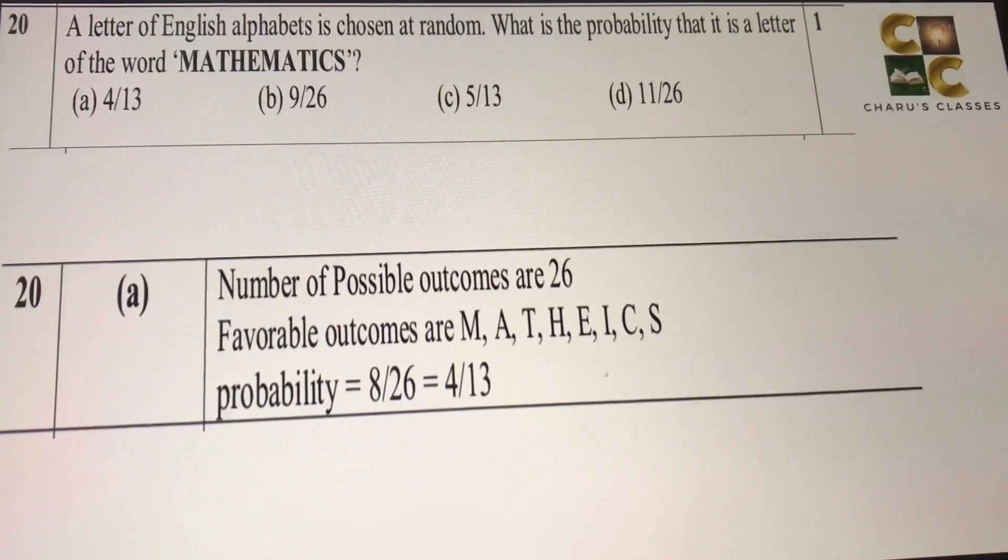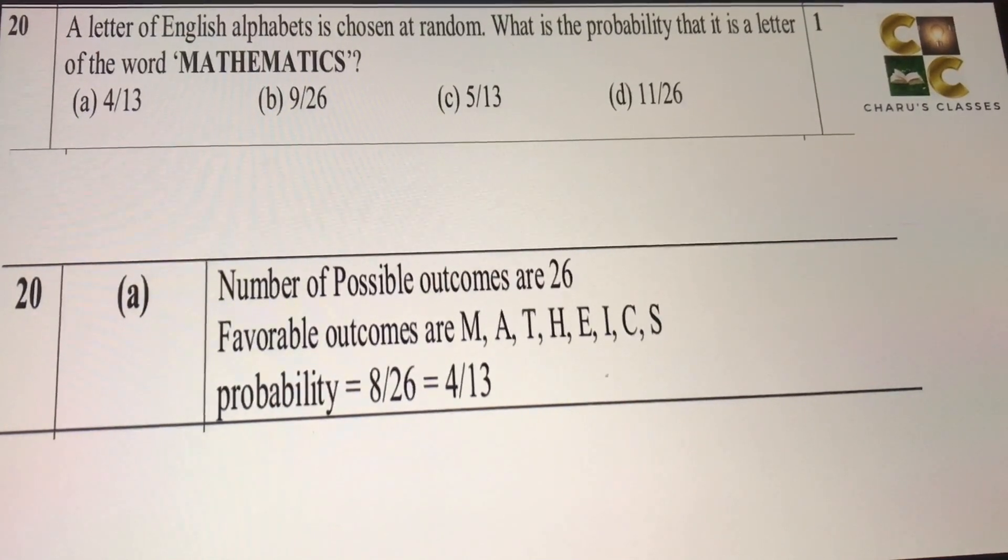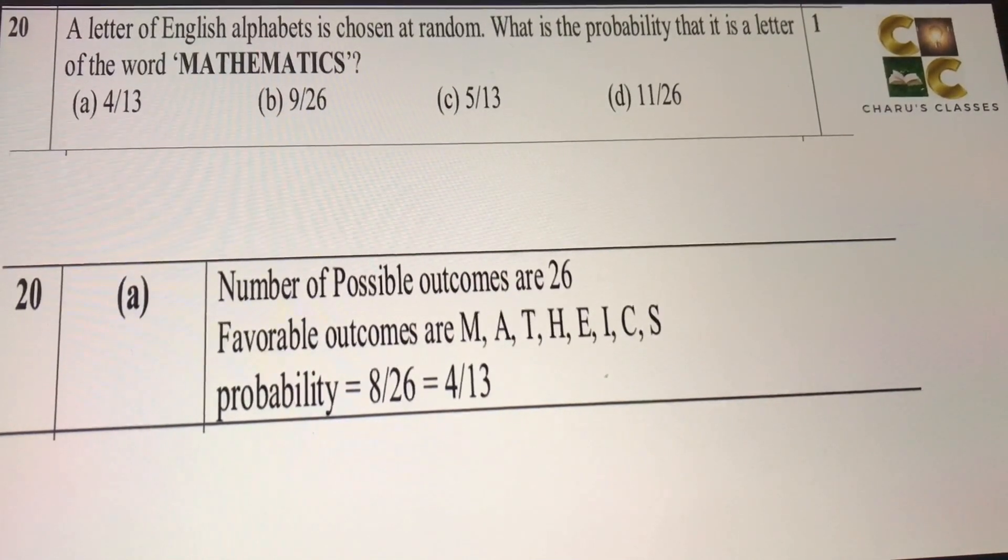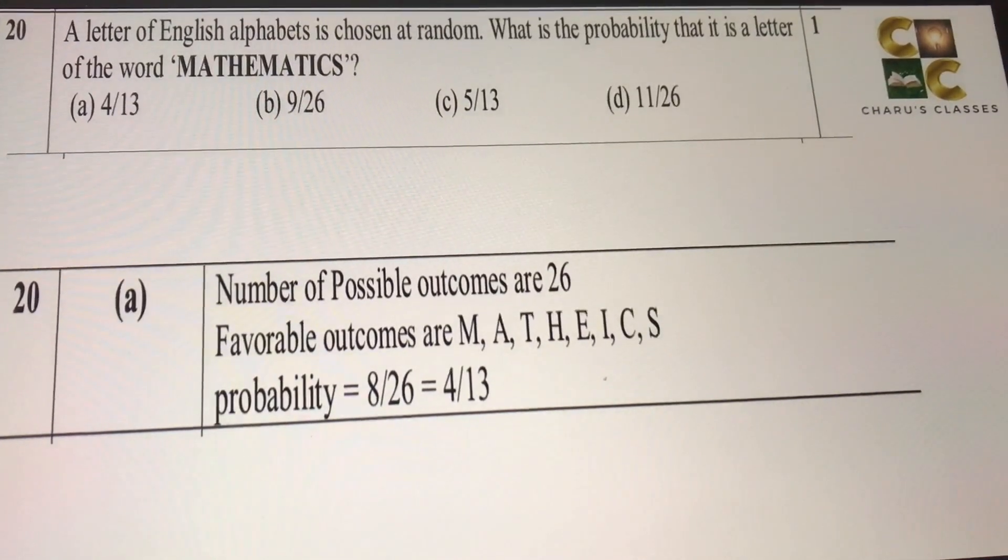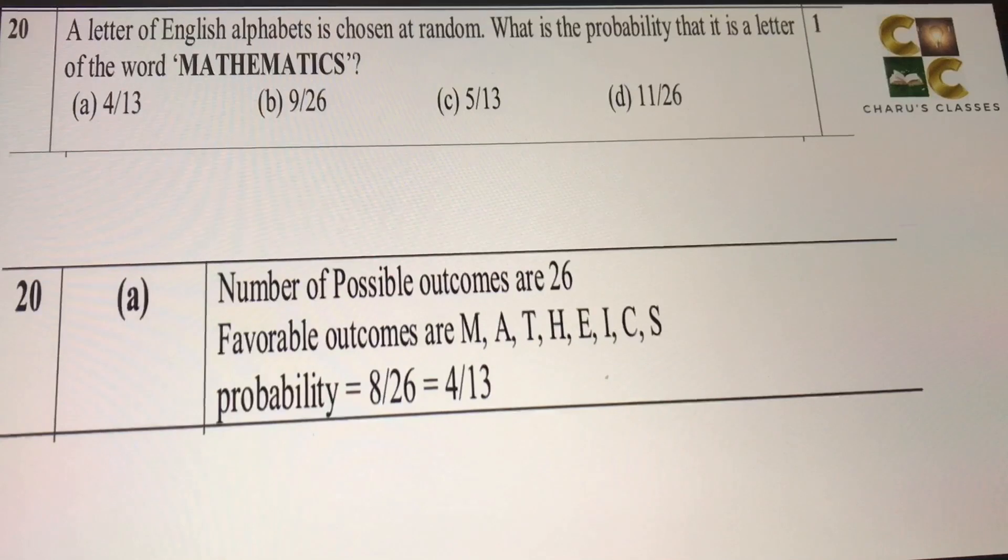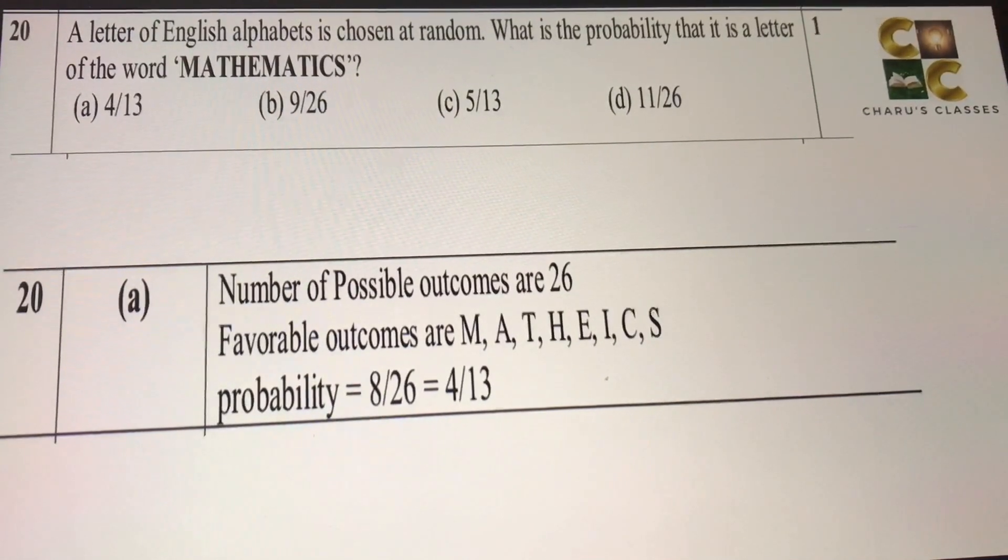So there are 8 letters in the word mathematics without repetition out of the total 26. That gives the probability as 8 by 26, or we can write it as 4 by 13. This is section A. I will be solving section B and C very soon and explaining it to you in the next video. So if you have not subscribed, please subscribe the channel. Thank you.